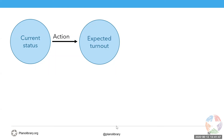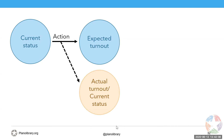But as the writer, we can't be so nice to the characters — we can't grant their wishes. The moment you grant their wishes, the story ends. So instead, something goes wrong, there's an actual turnout, and this actual turnout becomes the new status quo.